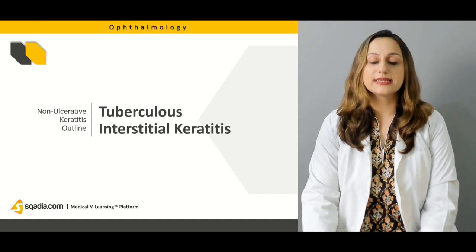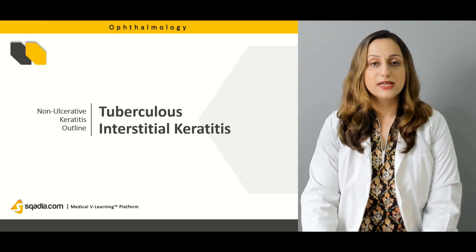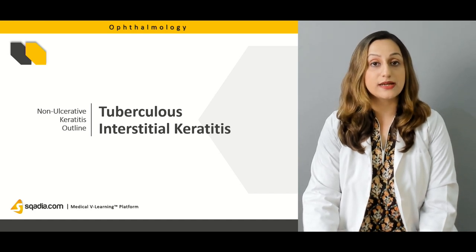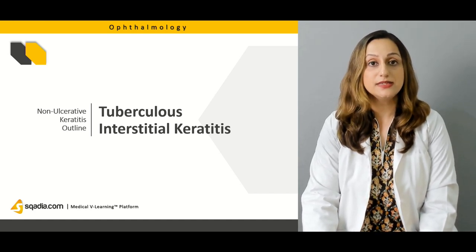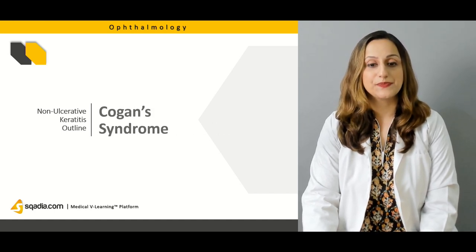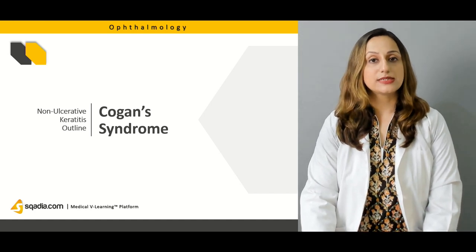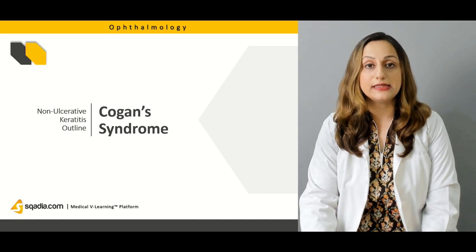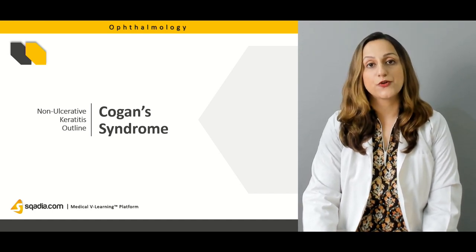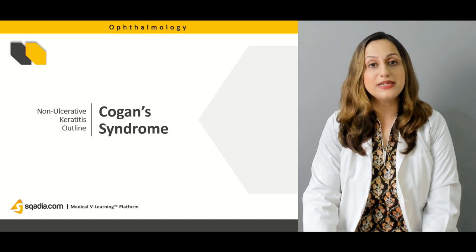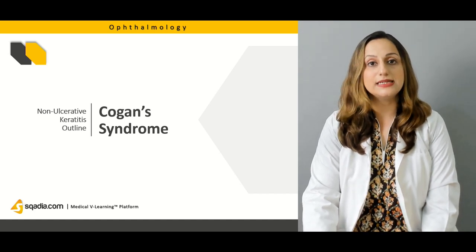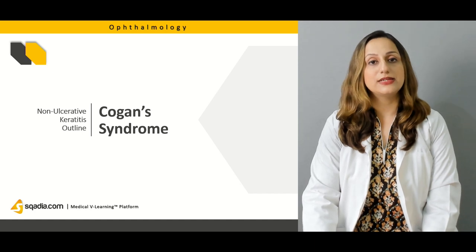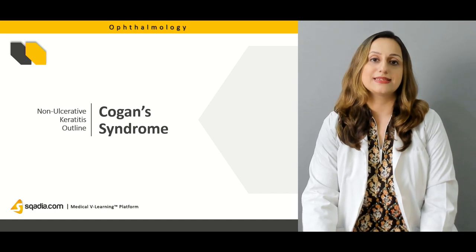We'll be discussing tuberculous interstitial keratitis in detail. It's one of the systemic conditions that also results in a superficial kind of keratitis, and it can be one of the very complicated and challenging conditions. One of the syndromic conditions known as Cogan's syndrome — where the patient is also suffering from deafness as well as a decrease in visual acuity — will be discussed in detail, along with the diagnosis and treatment guidelines.